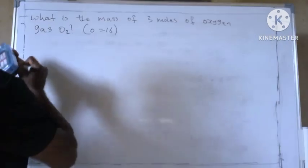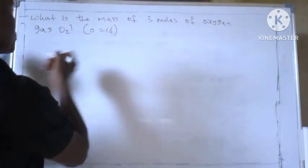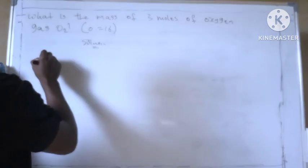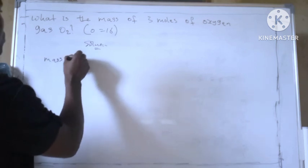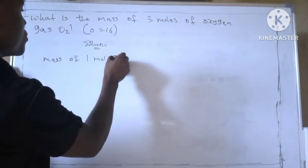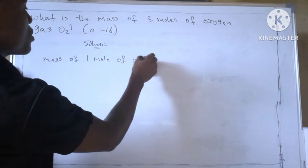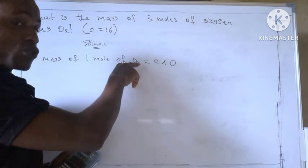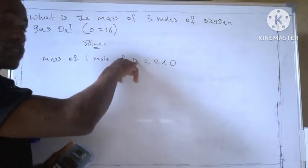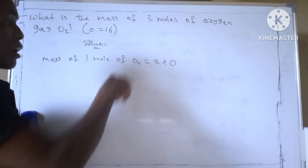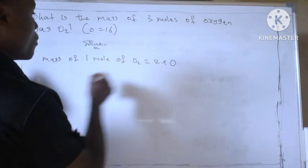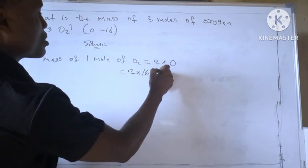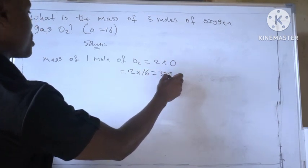Solution: mass of one mole of oxygen will be two times oxygen. We have two atoms of oxygen here, so we multiply everything together. Oxygen is given as 16 and the two atoms equal to two times 16, equal to 32 grams, which is the mass.